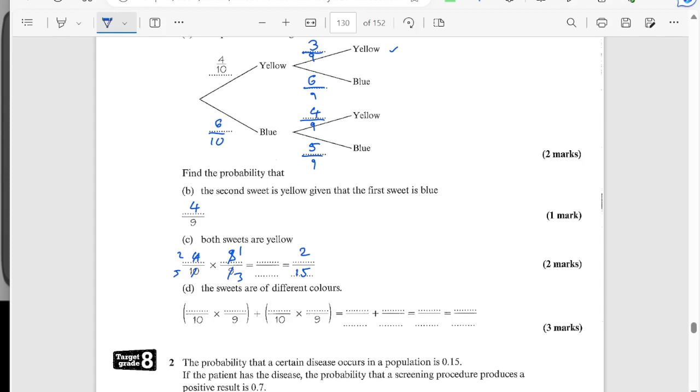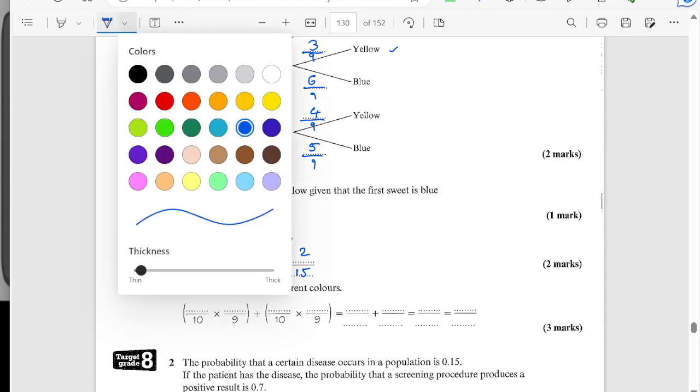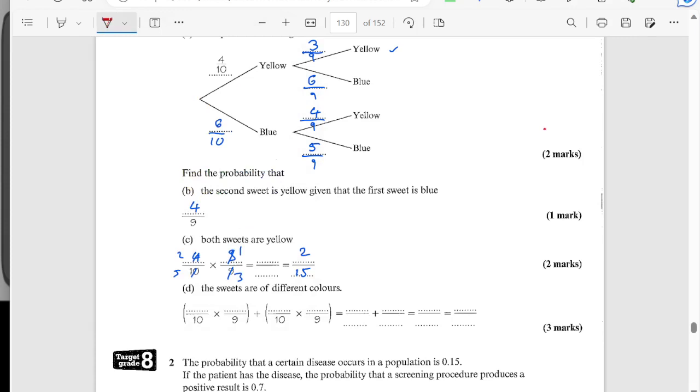And then part D, the sweets are different colors. That's going to be this branch here and this branch here. And this is part of the reason why I don't really recommend simplifying, I should do all parts because when we're adding fractions they need to have the same denominator. So I'm saying four over ten times by six over nine and then six over ten times by four over nine.